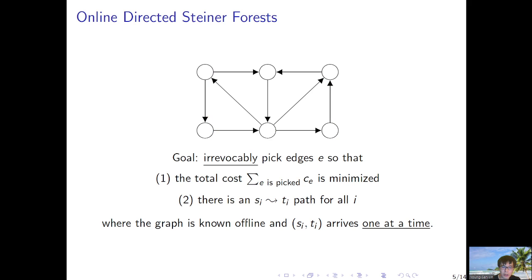In the online setting of this problem, our goal is to irrevocably pick edges so that the total cost is minimized and there is an S_i to T_i path for all i. The graph is given offline and S_i, T_i arrive one at a time. In the first round, we have S1 and T1, and we irrevocably pick edges so that there is an S1 to T1 path. In the second round, S2 and T2 arrive, and we pick more edges so that there is an S2 to T2 path.